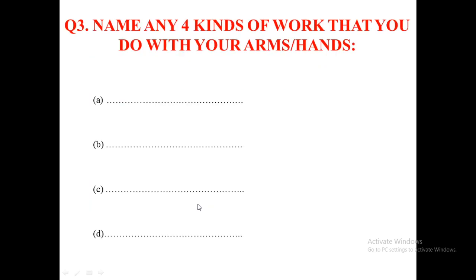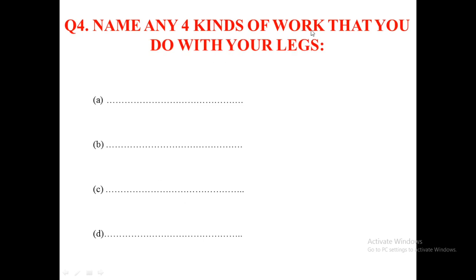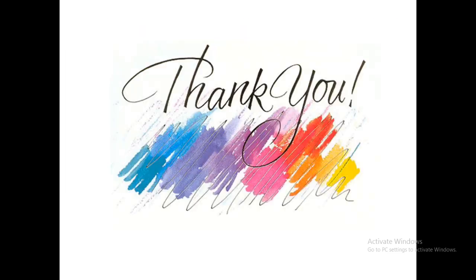Next question: name any four kinds of work that you do with your arms or hands. And name four activities you do with your legs — like running, jumping, playing football, and standing. You will have to write these yourself. I have completed this chapter. I think all of you understood this. In my next video I will do a new lesson. Thank you, bye bye.